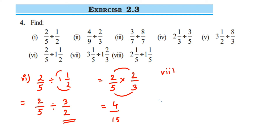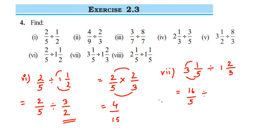Seventh question: 3 and 1 by 5 divided by 1 and 2 by 3. First, convert both mixed fractions to improper fractions: 3 fives are 15, 15 plus 1 is 16, giving 16 by 5. Then 3 ones are 3, 3 plus 2 is 5, giving 5 by 3.